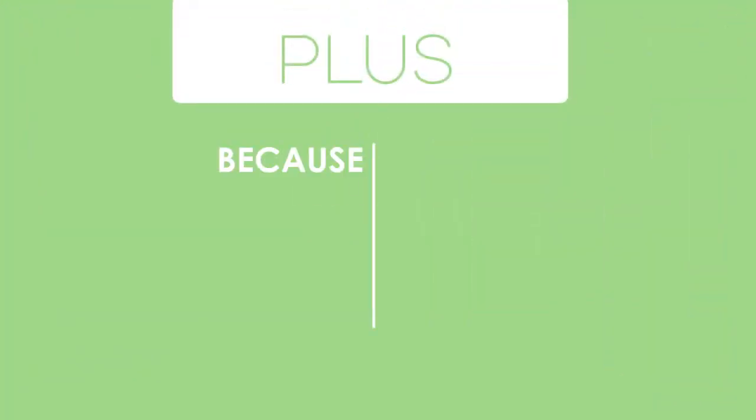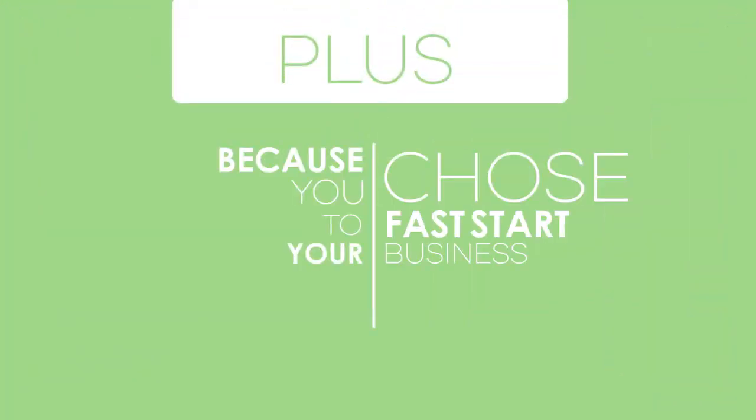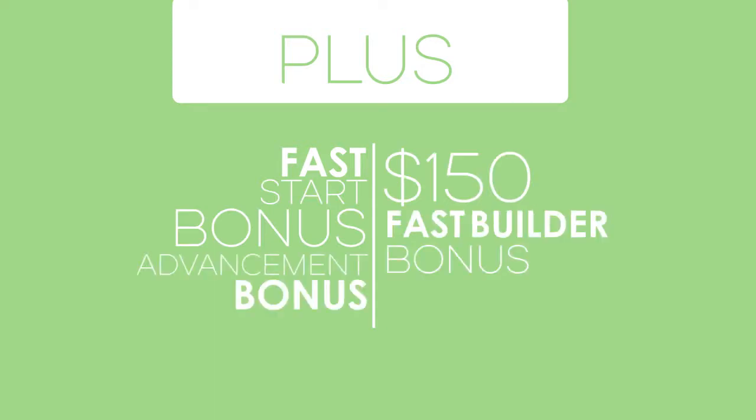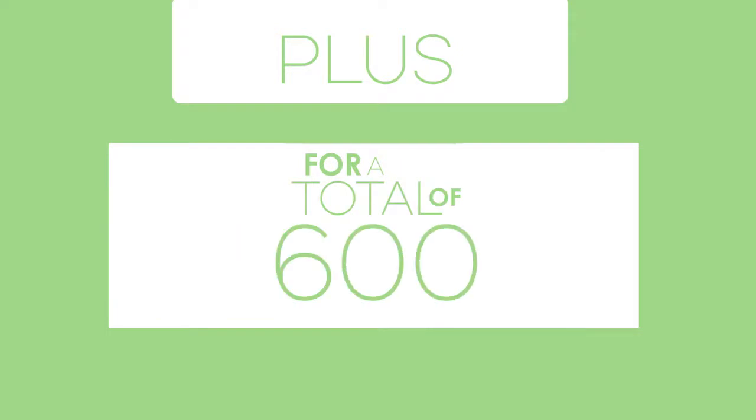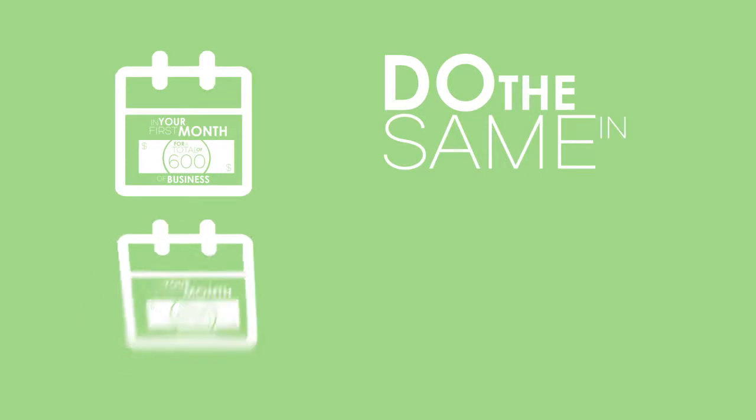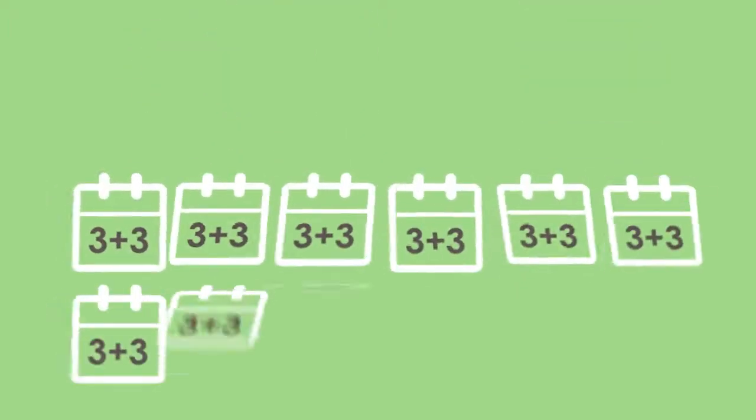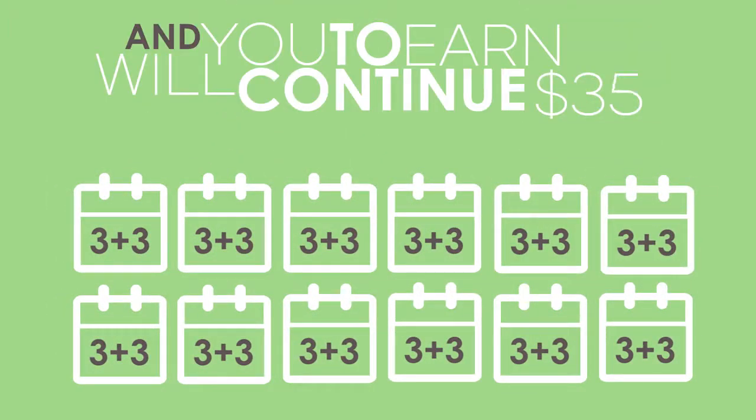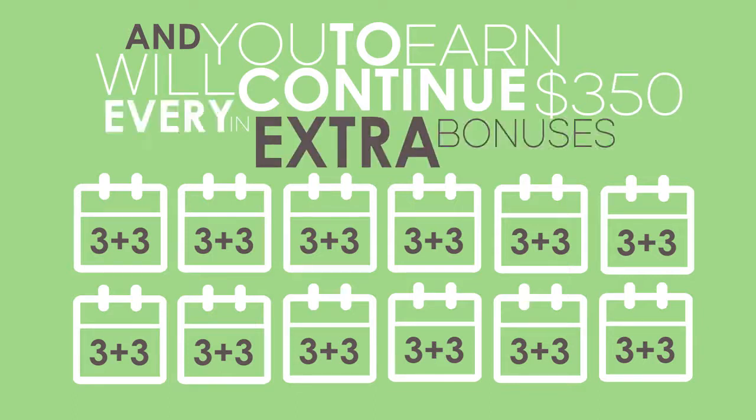Plus, because you chose to fast start your business, you will receive your fast start bonus and a $150 fast builder bonus along with your advancement bonus for a total of $600 in your first month of business. Do the same in your second month and you will qualify for your first platinum bonus of $350. Continue with the 3 plus 3 model and you will continue to earn $350 in extra bonuses every month.